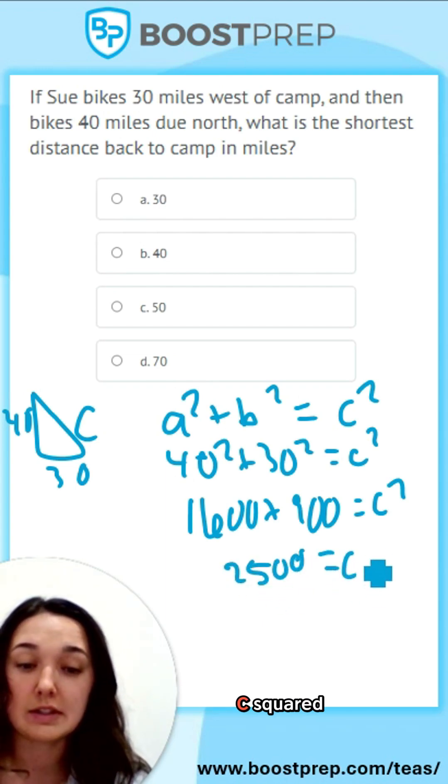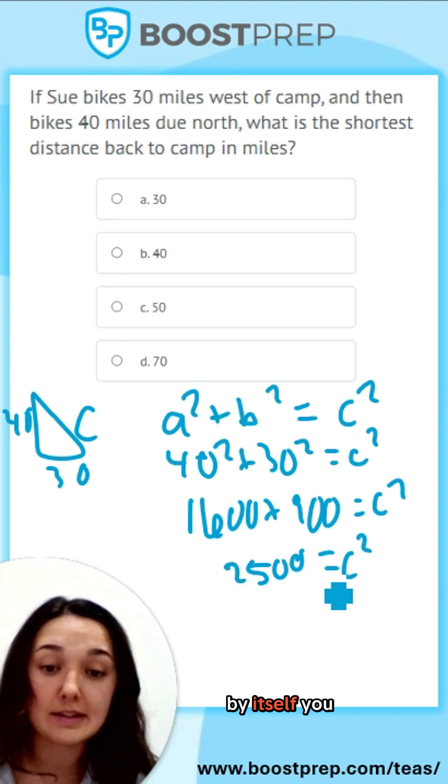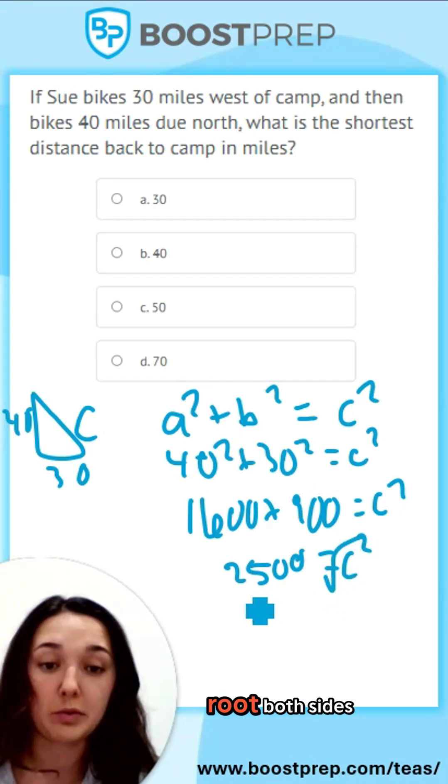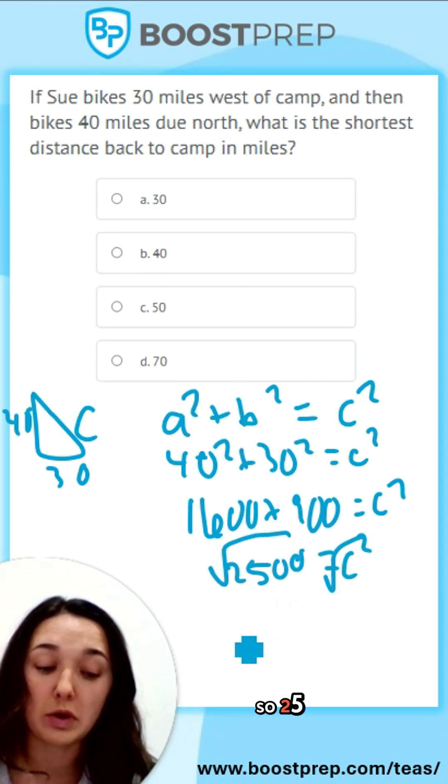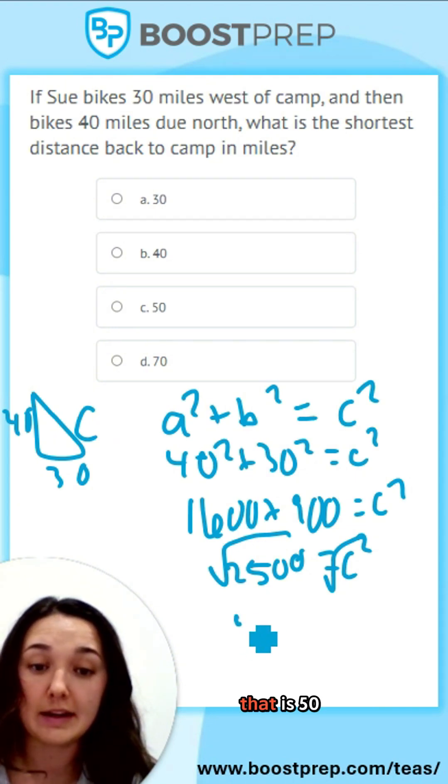2,500 equals C squared. To get C by itself, you have to square root both sides. So 2,500, the square root of that is 50 equals C.